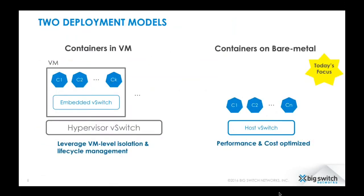There are actually two models for deploying containers. The first model, shown on the left part of the slide, is containers in a VM. A VM is a well-understood isolation unit for compute with mature operational capabilities, serviceability capabilities, and lifecycle management tools. There is fair interest in running containers within a VM environment — it's a very valid deployment model. In this case, you would typically have some type of network within the VM so that containers interact with each other, shown here as an embedded vSwitch, and then a hypervisor vSwitch on the host to which multiple VMs are connected.